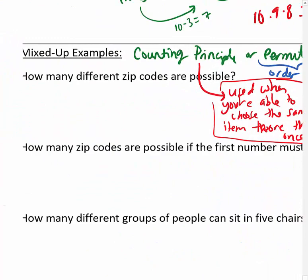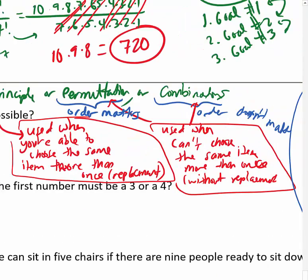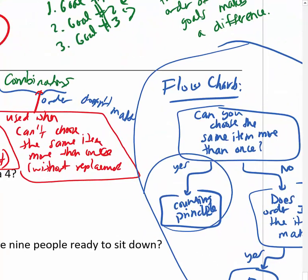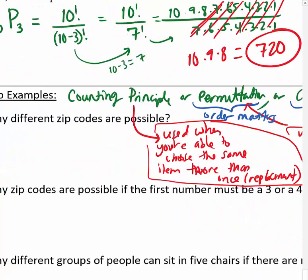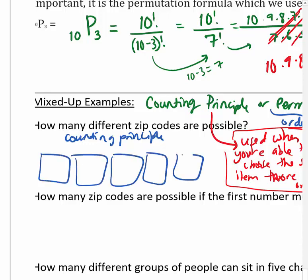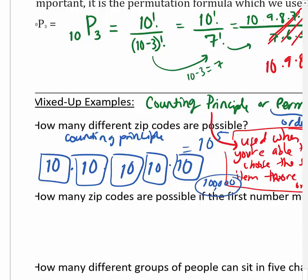How many different zip codes are possible? When choosing numbers for a zip code, can I choose the same number more than once? Yes - you can have repeated digits. So I use the counting principle. There are 5 digits in a zip code, each can be any of 10 digits. So it's 10 to the 5th power, or 100,000 possible zip codes.